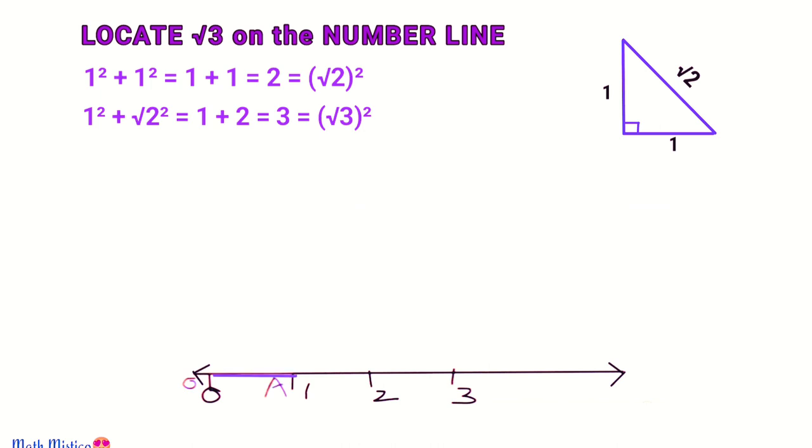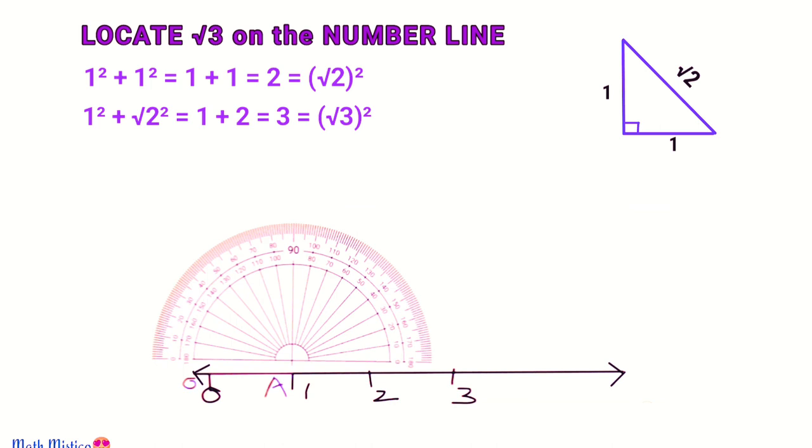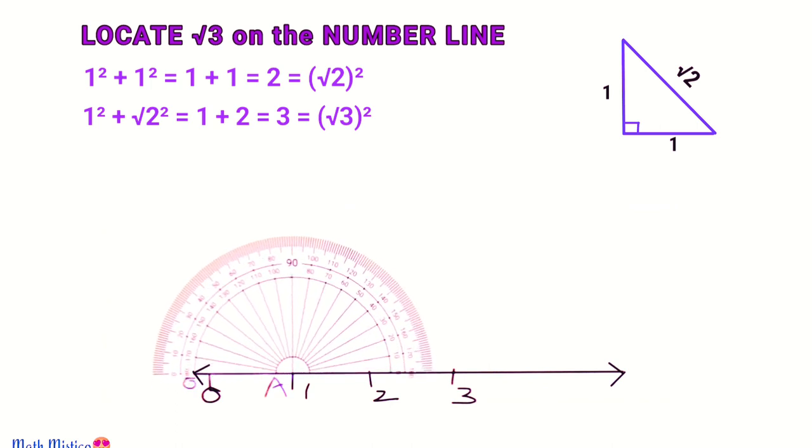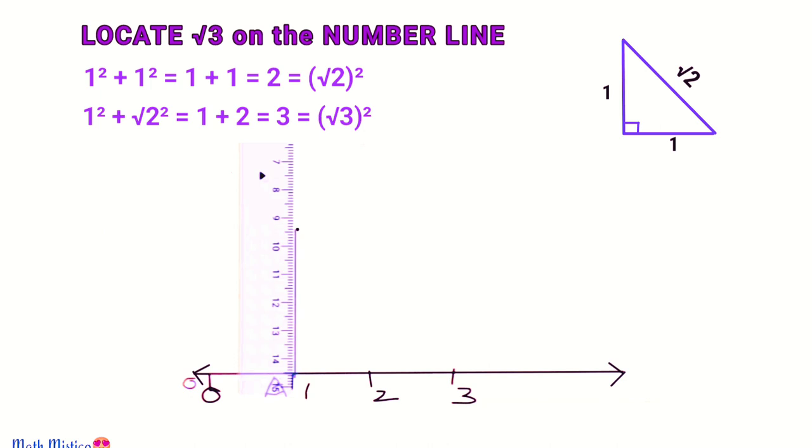So this is one unit. Now at point A we will draw a perpendicular. This perpendicular you can draw using your compass or your protractor. We are going to keep our protractor here at point A and align it with the line. This ray of 90 degree angle should be longer than the second side, that is one unit.